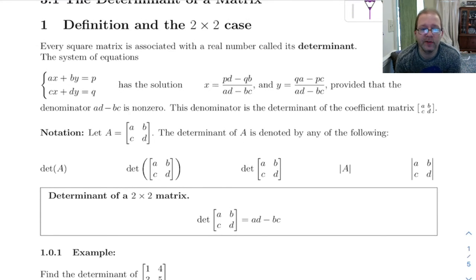Alright, 2x2 determinants are easy to find. The determinant of a 2x2 matrix is just A times D minus B times C.